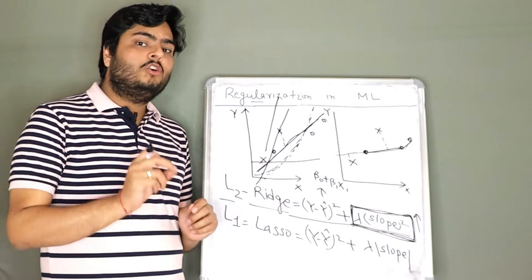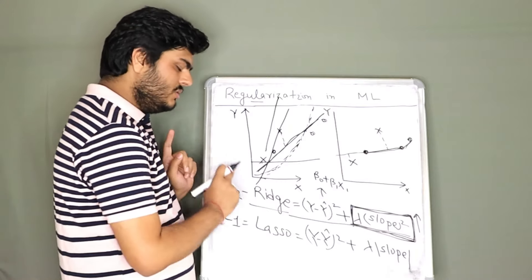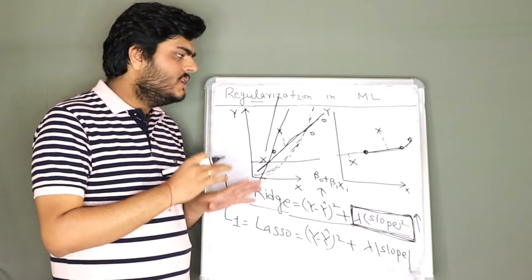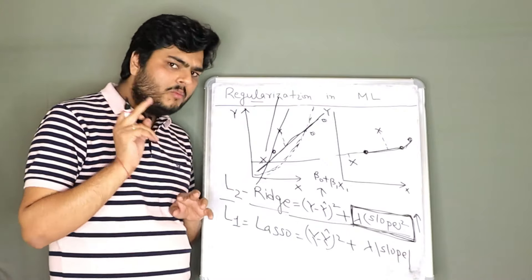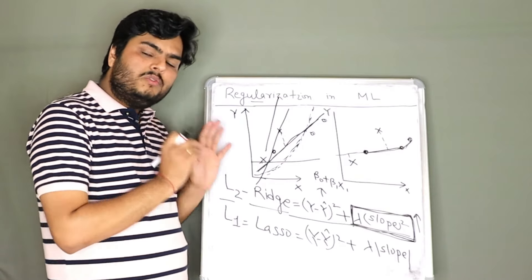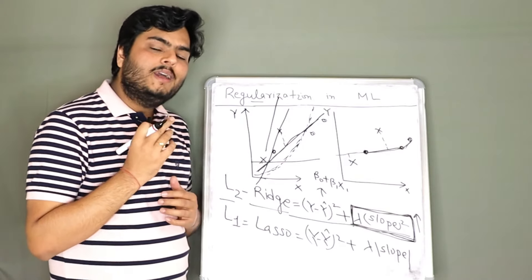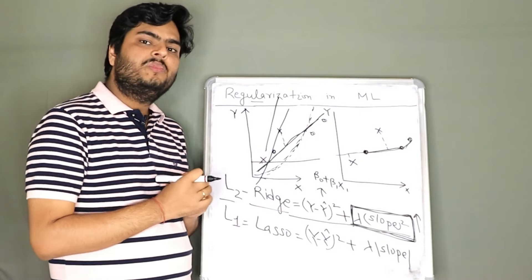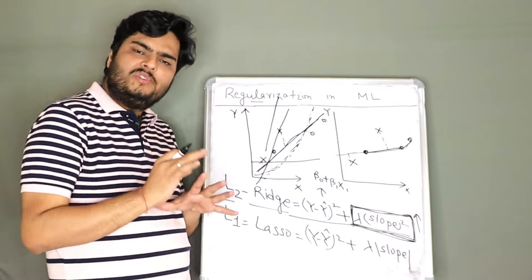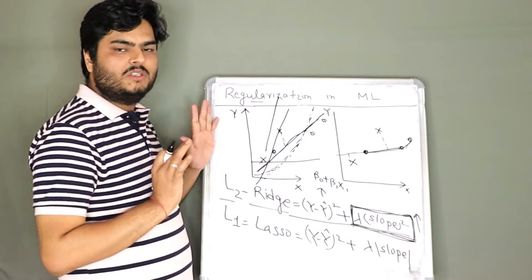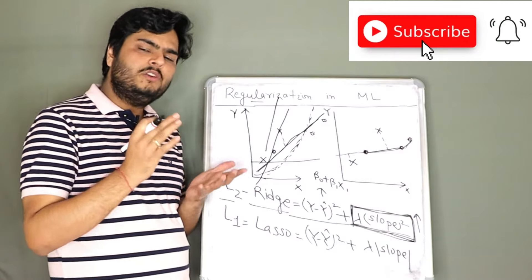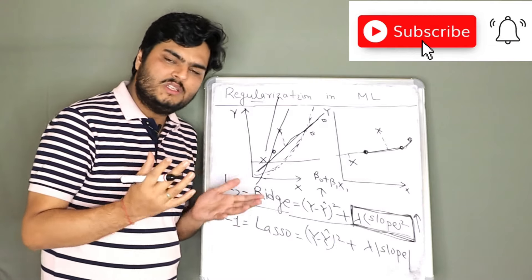One more thing to add: you should always normalize or standardize your data before using Lasso or Ridge, otherwise you will not see very good results. To summarize: regularization is a process to find the optimal point — the sweet spot — which balances bias and variance. Different types depend on the model: L1/L2 for regression, bagging/boosting for decision trees, dropout for neural networks. In the next video I'll cover the differences between L1 and L2, why one makes some coefficients zero and is used for feature selection, and how to implement this in Python.